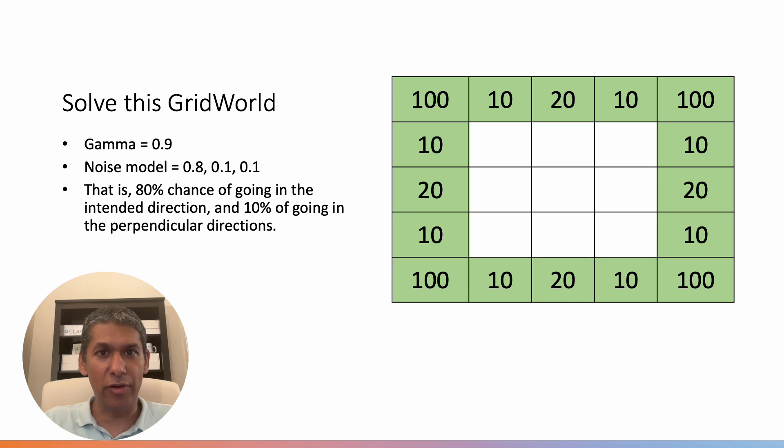So these have these values, 100, 10, 20, 10, etc. All the states that don't have a number, all those nine, those are the non-terminal states. So we have to find their value.